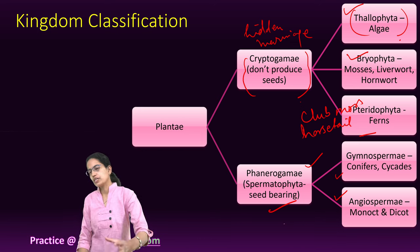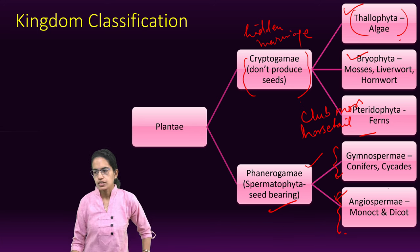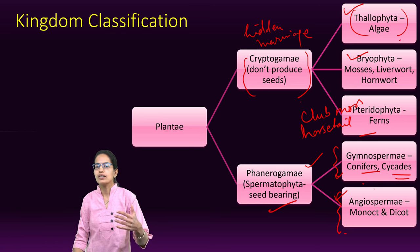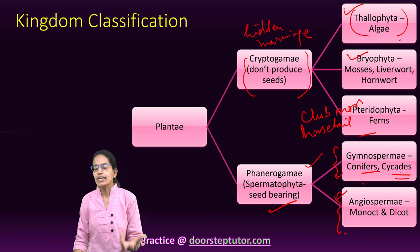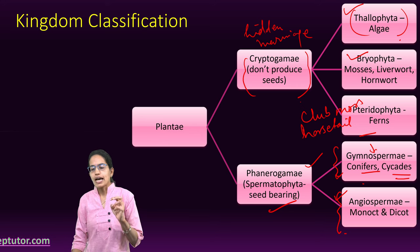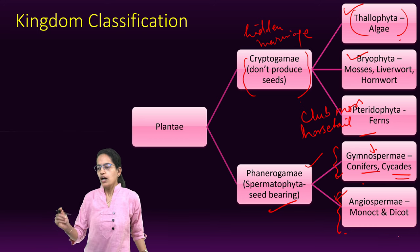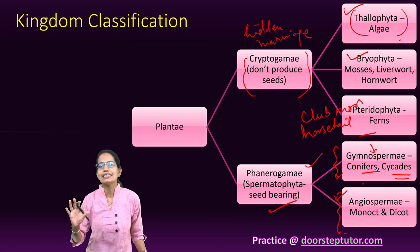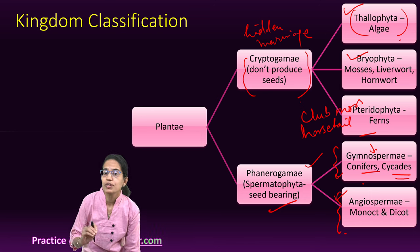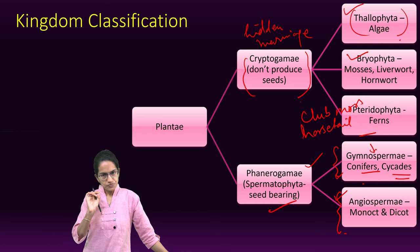Coming on to Phanerogams, which are seed-bearing. Gymnosperm and Angiosperm are the two classifications. Under Gymnosperm, conifers and cycads are good examples. Conifers include pine and fir. Cycas is a common example for cycads. Here the seeds are exposed — that is the major thing differentiating them from Angiosperms. Gymnosperms are mainly woody seed-bearing plants. They do not have flowers, and the male and female reproductive organs are separate. The female reproductive organs are cones. There is no fruit.